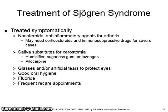Salivary substitutes for xerostomia such as humidifiers, sugarless gum or lozenges, and pilocarpine may be used. Glasses and/or artificial tears are recommended to protect the eyes. Excellent oral hygiene, fluoride, and frequent re-care appointments are also important.